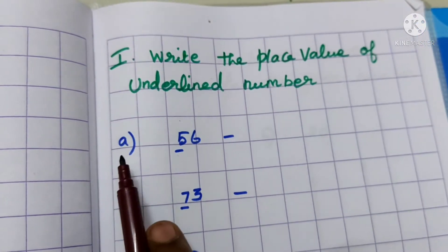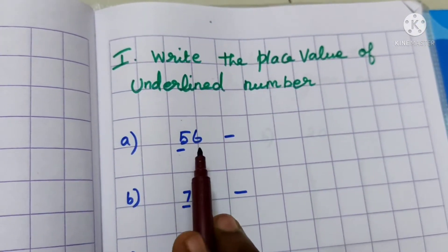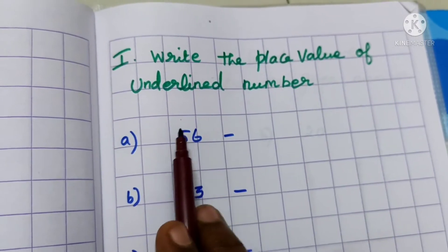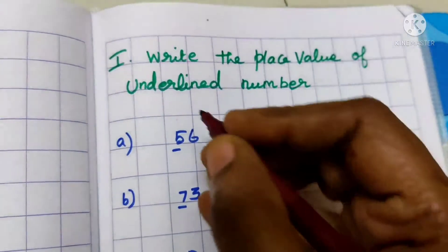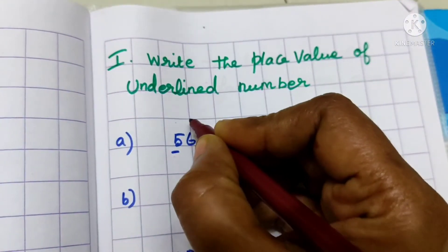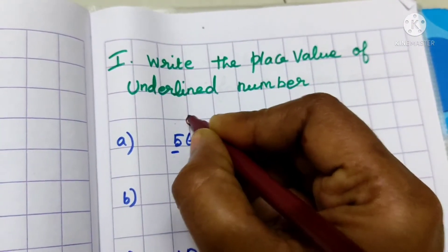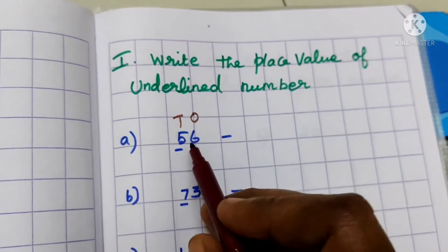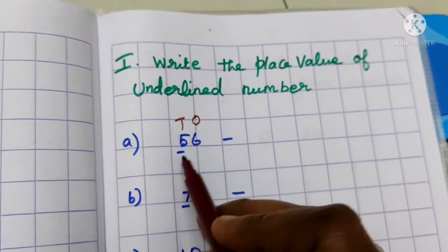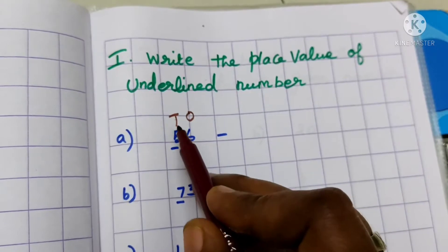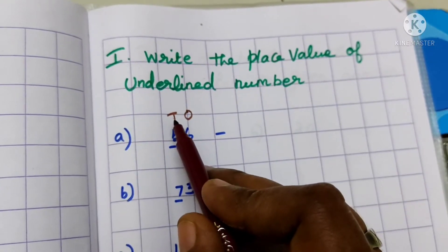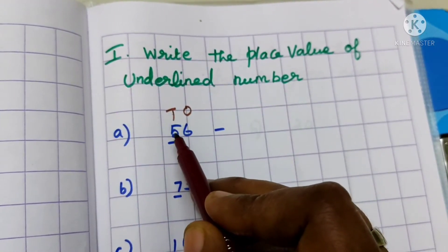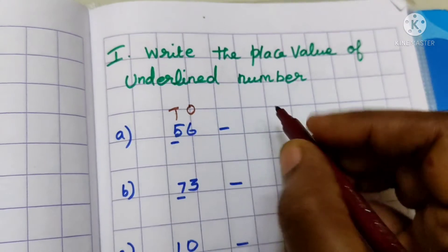First one: 56. Before you write, put the place value — 1's and 10's. What number have we underlined? 5. See the place value — this is 10's. How many 10's? 5 tens.